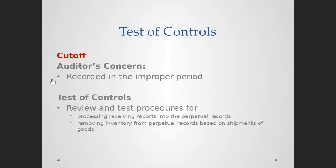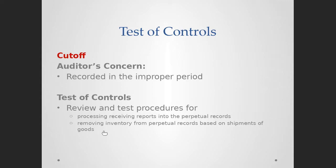The next management assertion is cutoff — inventory recorded in the improper period. The test of control is to review and test procedures for processing receiving reports into perpetual inventory records. There are two regular events: inventory is added when the receiving report is generated upon arrival, and inventory is removed from perpetual records based on a shipping document. We want to make sure inventory is added when actually received and removed when the shipping document is issued.